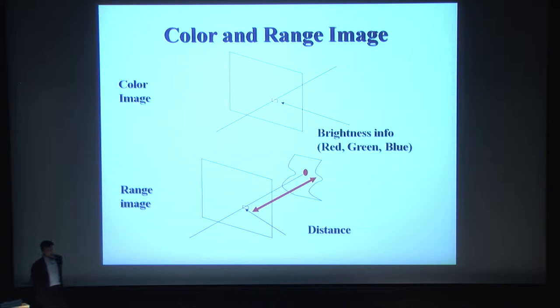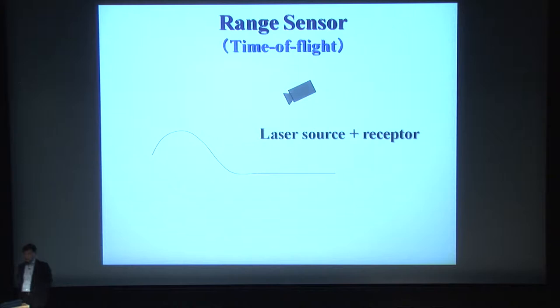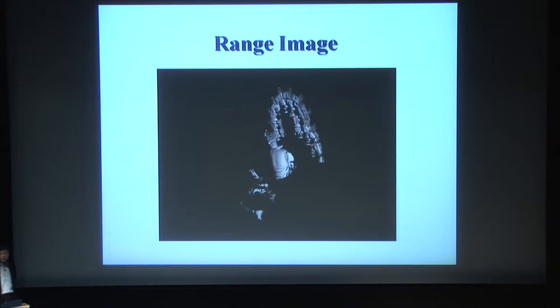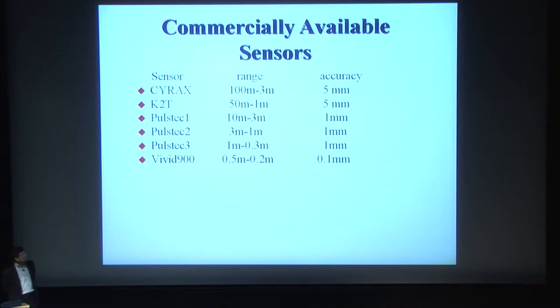One typical example of range sensors is time-of-flight sensors: a laser is projected to the object, and the flight time is measured to provide distance. There are many commercially available sensors, from Silux to Vivid, covering ranges from 20 centimeters up to 100 meters, and resolutions from 0.1-millimeter accuracy up to 5-millimeter accuracy.